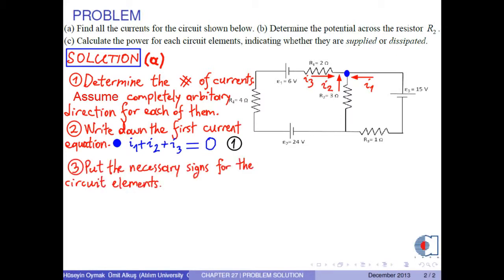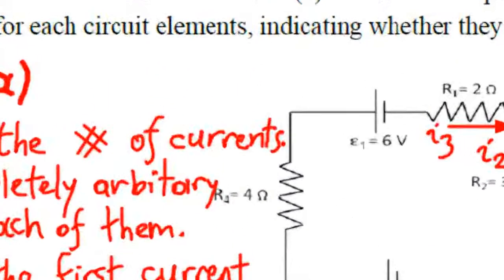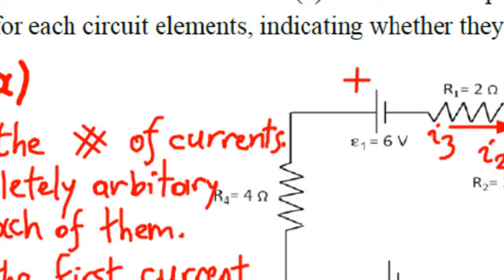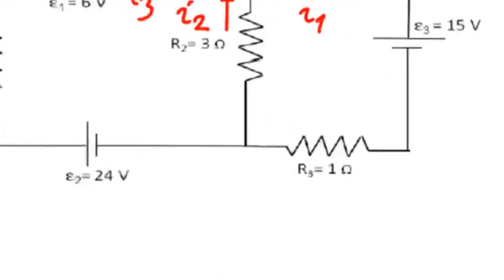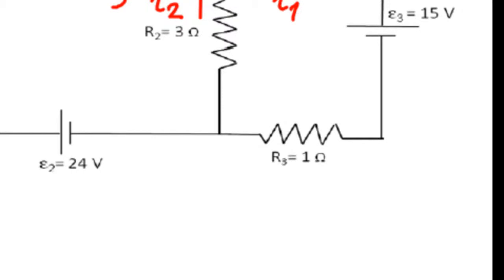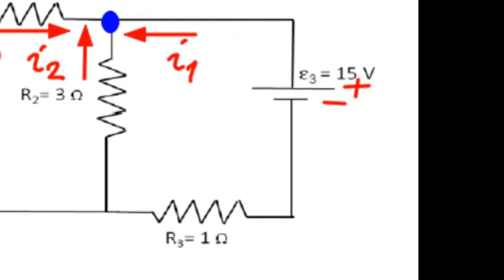Step 3: Put the necessary signs for the circuit elements. For the batteries, the positive sign corresponds to the long stick and the negative sign to the short stick. For batteries E2 and E3, we have plus and minus signs accordingly. For resistors, the discussion is different. For resistor R3, which is 1 ohm, the current is I1 flowing to the right. Because current flows from higher to lower potential, we write a plus sign on the entry side and a negative sign on the exit side.